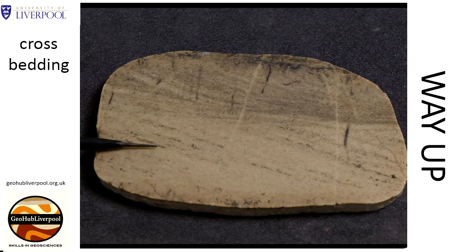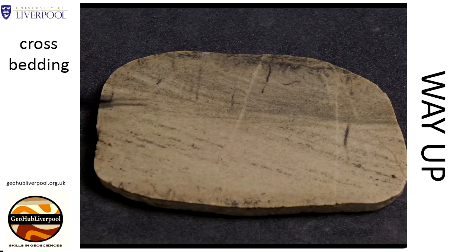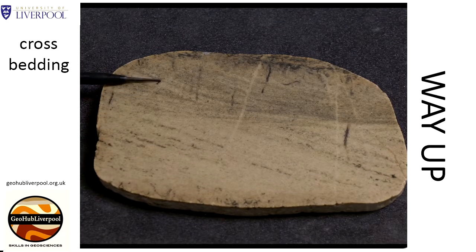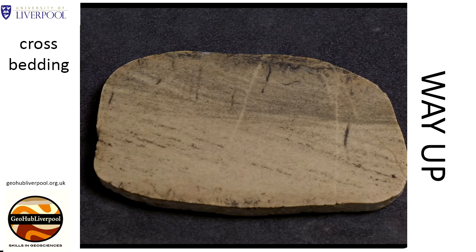The cross bedding shows the general current directions. The current was flowing from left to right in the lower set, as shown by the pointer. In the upper set of cross bedding, the current was also flowing from left to right.